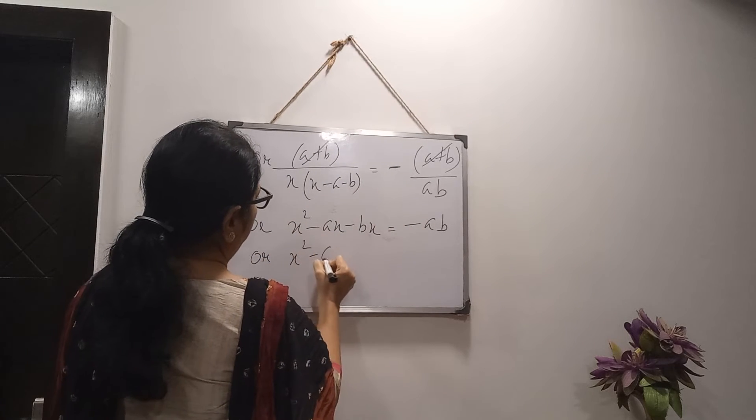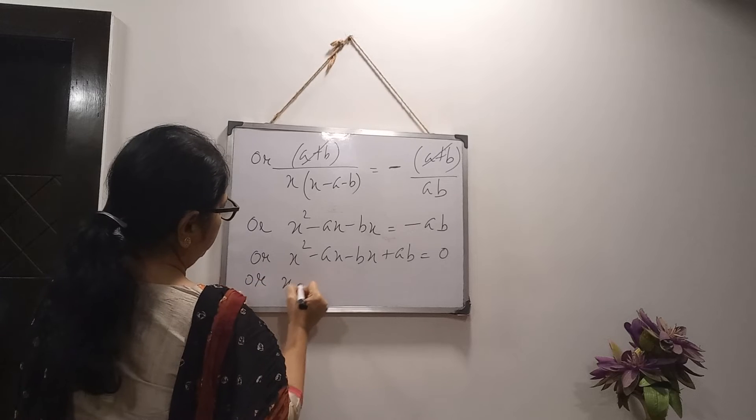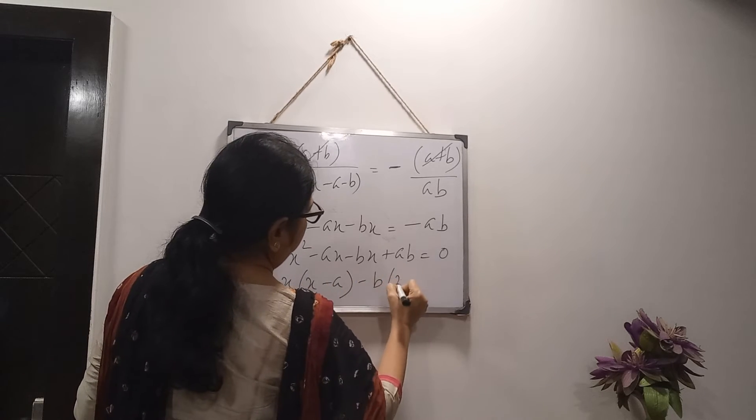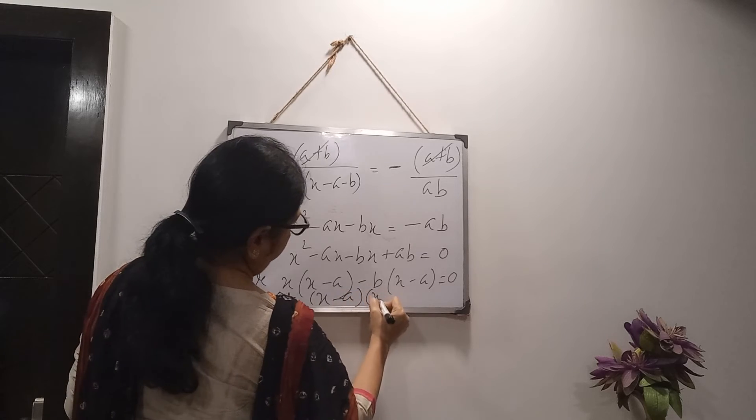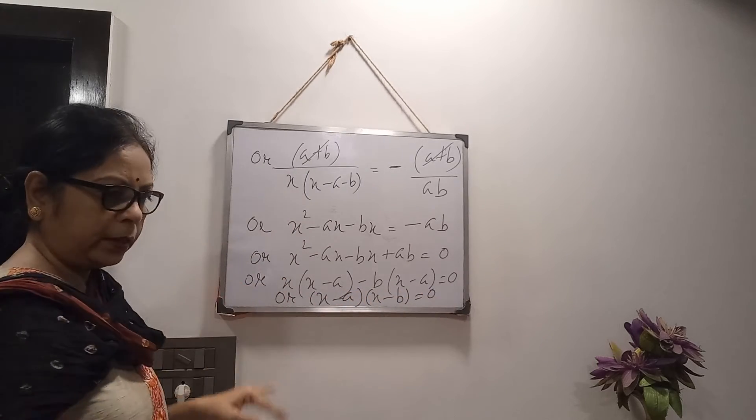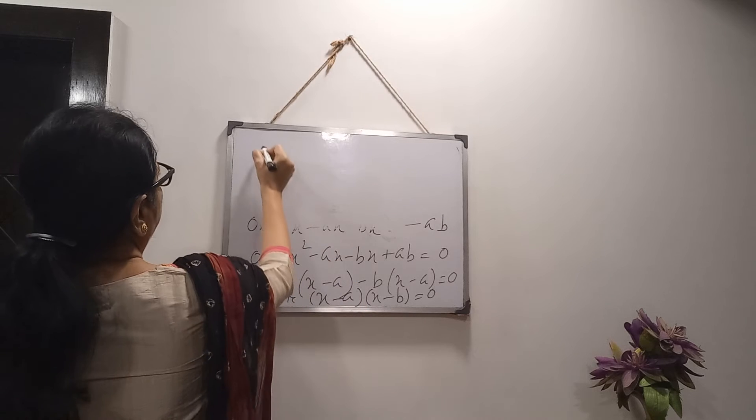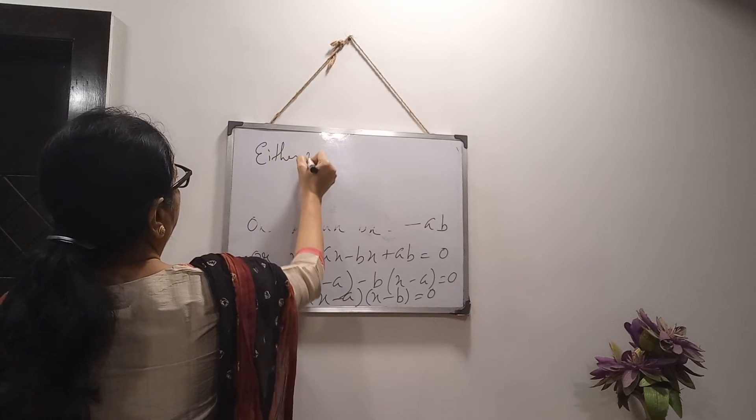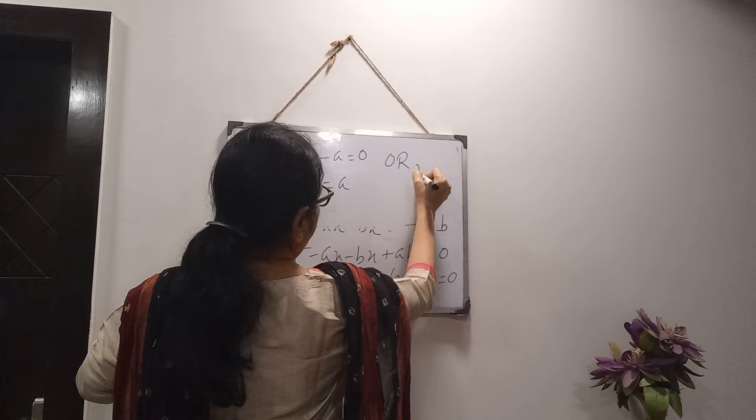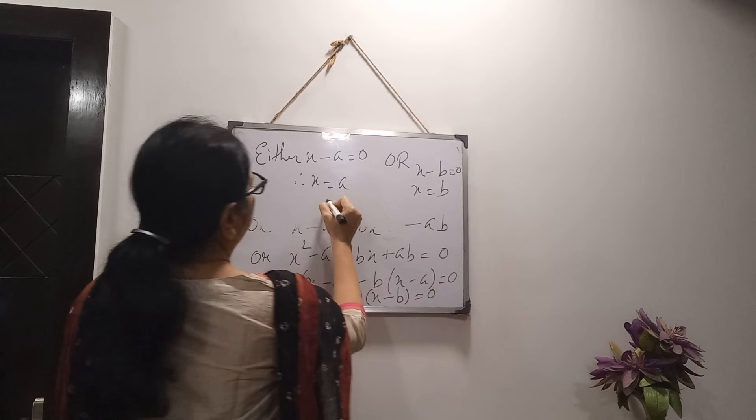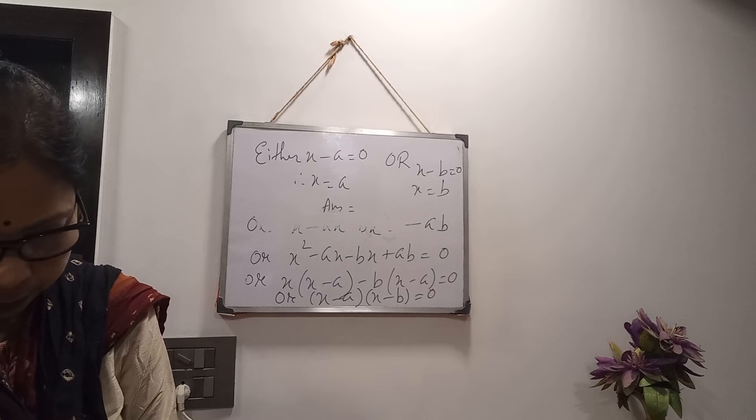Now, take this one. Left-hand side. x square minus ax minus bx minus ab equals to x. Then, take on. x minus a minus b. So, either x minus a equals to 0. That means x equals to a. Or, x minus b equals to 0. That means x equals to b. Answer you will write down separately. And comma b are the solutions.